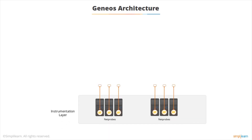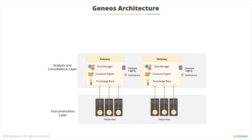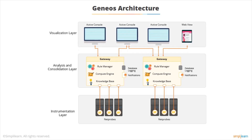The net probes sit at the bottom as the instrumentation layer, actually running on the applications being monitored. Each group of net probes is managed by a gateway, which has a number of rules, a compute engine, and a knowledge base, so it can analyze the data coming back from the net probes. Then the active consoles provide the visualization layer, giving you a view of what is actually happening within the Geneos environment.